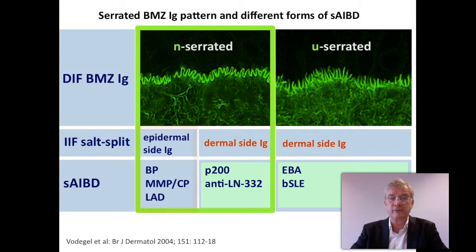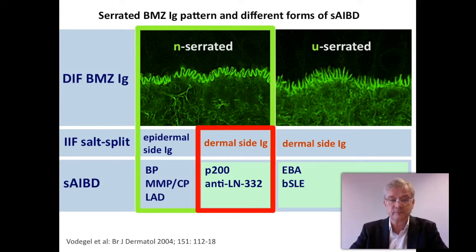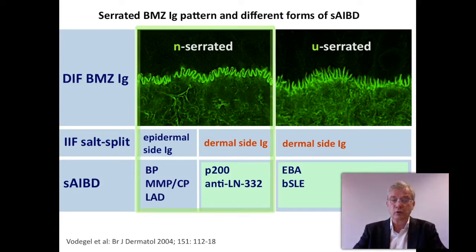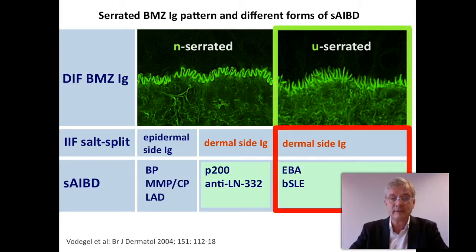When the DIF n-serrated pattern combines with a dermal side binding in salt split skin, the diagnosis is limited to anti-p200 and anti-laminin 332 pemphigoid. When the DIF u-serrated pattern combines with a dermal side binding in salt split skin, the diagnosis is limited to EBA and bullous SLE.